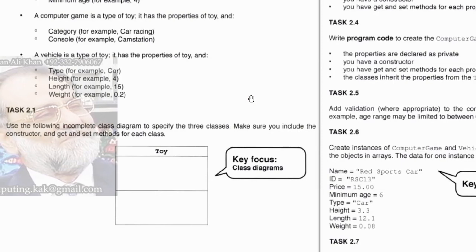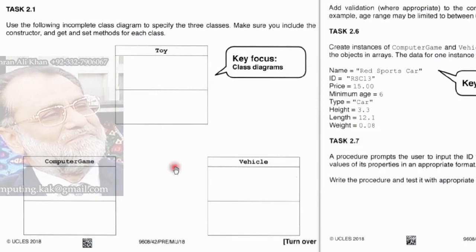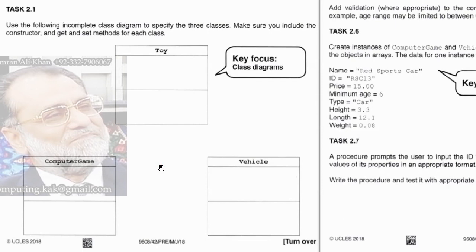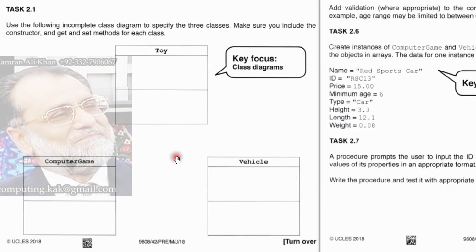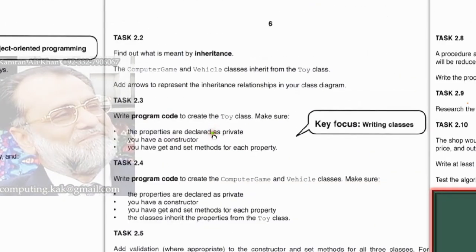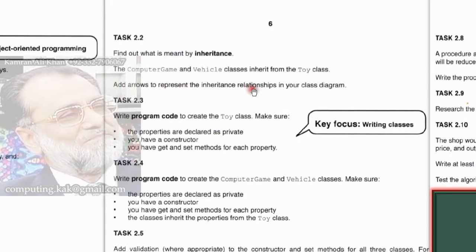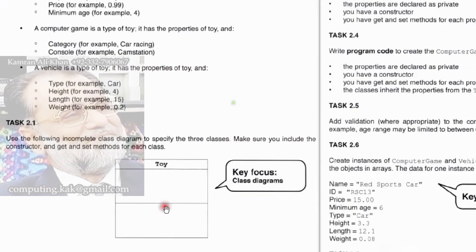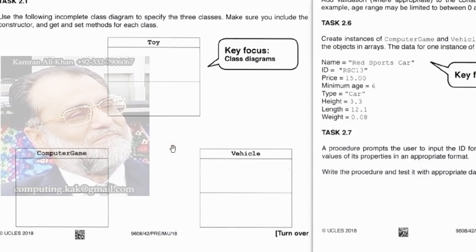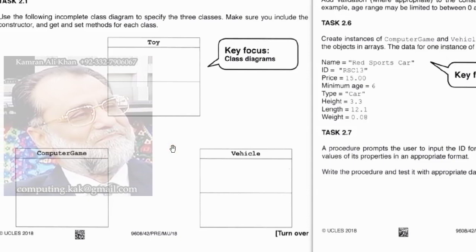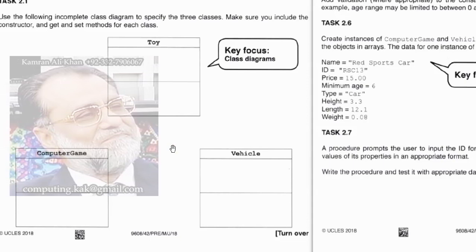Let's start focusing on task 2.1. There is an incomplete class diagram and we need to complete it. In task 2.2 we need to explain what is meant by inheritance and add arrows to the diagram. We will be focusing on this diagram and doing both of these tasks simultaneously.